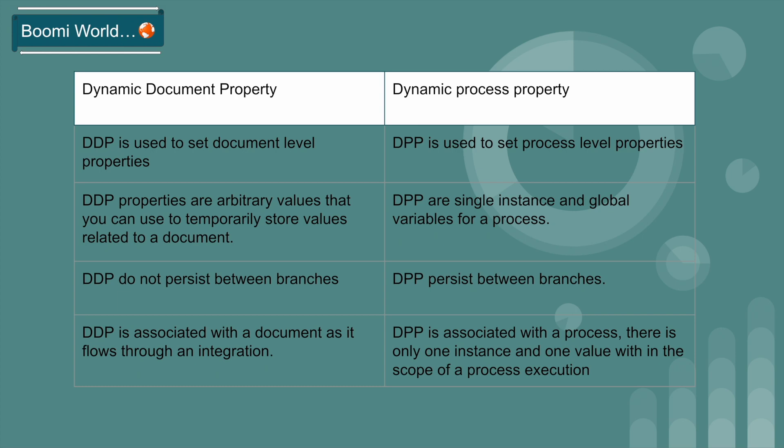For example, if you have a thousand invoice documents and a dynamic document property named 'unique ID', you will have a thousand instances of that property with a thousand different values. Dynamic process property is associated with a process — there is only one instance and one value for a process within the scope of a process execution.